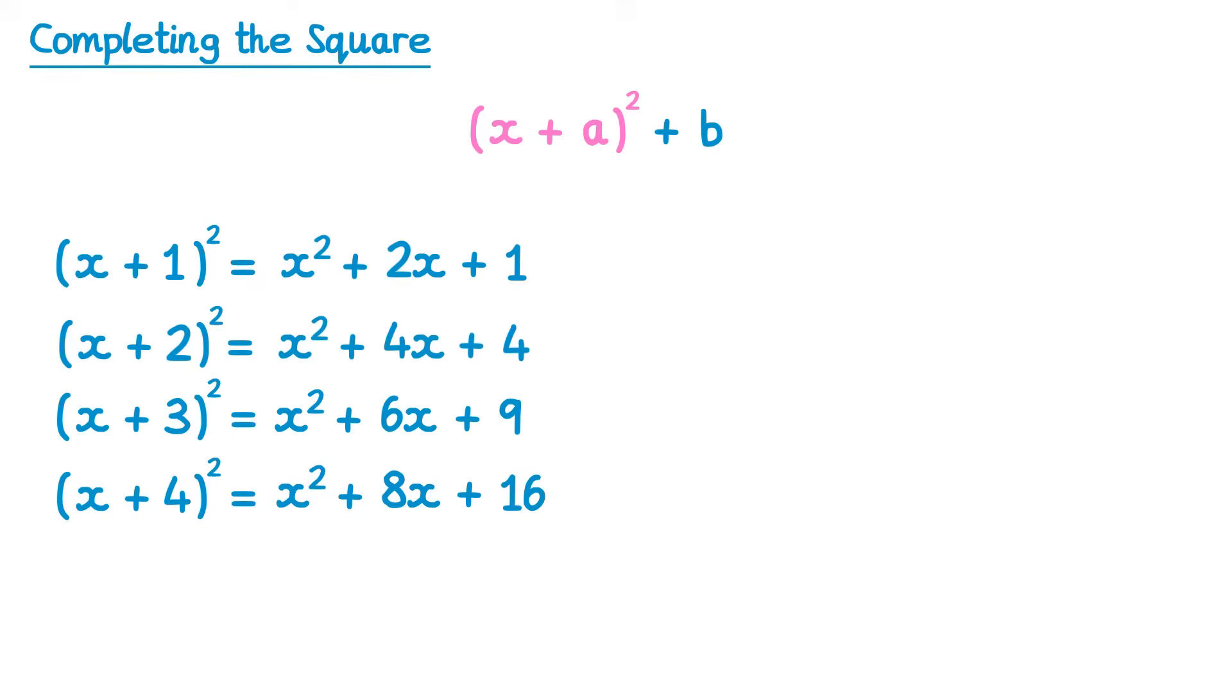At this point there are some patterns that we can be aware of. We're able to get from the number in the brackets to the coefficient of x quite quickly. You should notice that to do this all we need to do is double the number in the brackets. So 1 times 2 gives you 2, 2 times 2 gives you 4, and 3 times 2 gives you 6x, and so on.